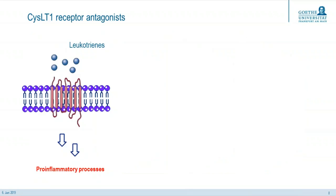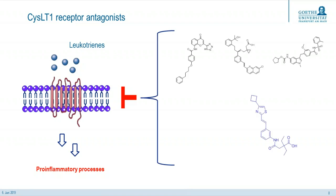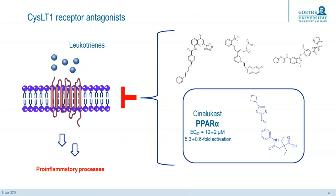Now I want to give you some information about the CysLT1 receptor — I will call it short CysLT1 receptor. The CysLT1 receptor is a G-protein coupled receptor. The leukotrienes induce inflammation through CysLT1 and also through CysLT2 receptor, which are co-expressed by most myeloid cells, and they are very important mediators of human bronchial asthma. We know there are some CysLT1 receptor antagonists — especially Zafirlukast, Montelukast, Pranlukast, and Cine-Lukast — all used as second-line therapy for asthma bronchiale. We could identify Cine-Lukast as a quite moderate PPAR-alpha modulator, so in this investigation we chose Cine-Lukast as a starting point for further optimization.